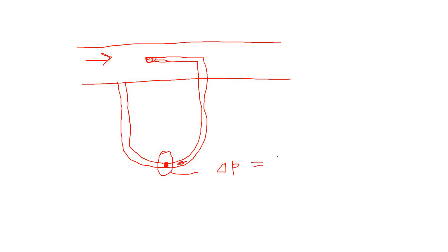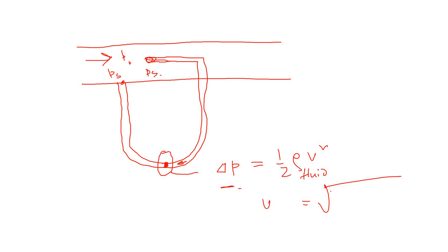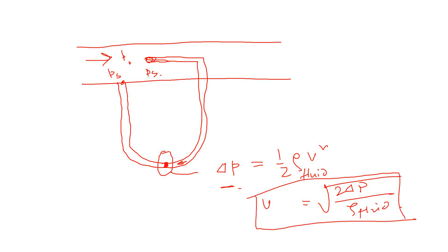This delta P is related to the dynamic pressure, because the static pressure cancels out — static pressure is everywhere in the pipe. So if you connect the two taps like this, you can directly measure the pressure difference. Then velocity equals the square root of 2 times delta P divided by rho of the fluid flowing inside the pipe. So you can measure the velocity using an electronic device, and then, after measuring the velocity, you can measure the flow as well once you know the cross-sectional area.